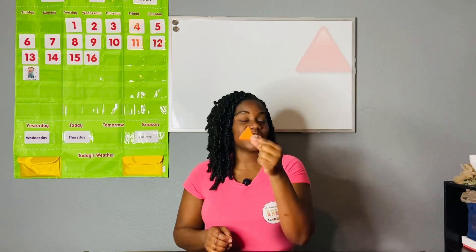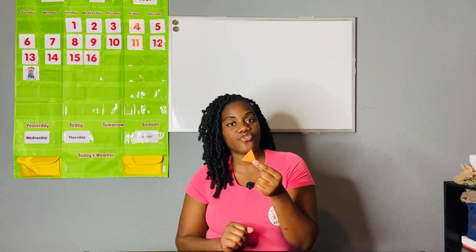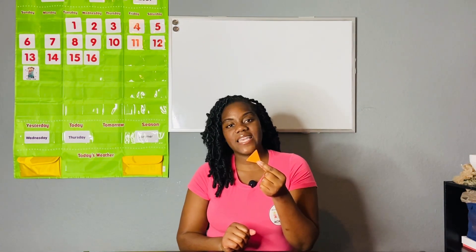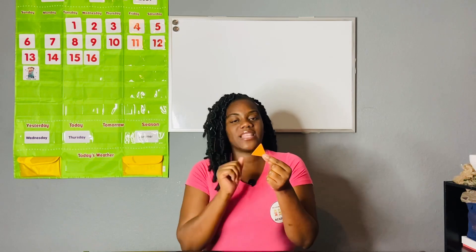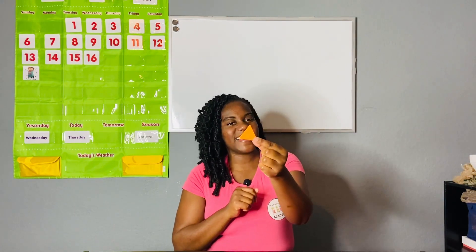A triangle has three sides and three corners. In the word 'triangle' it has the word 'tri' — tri means three. Let's count our three corners and three sides: one corner, two, three corners; one, two, three sides. Triangle.